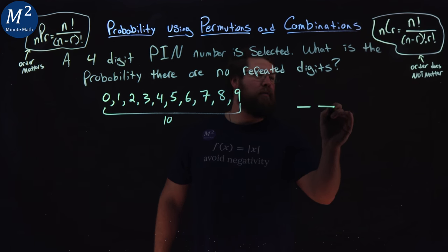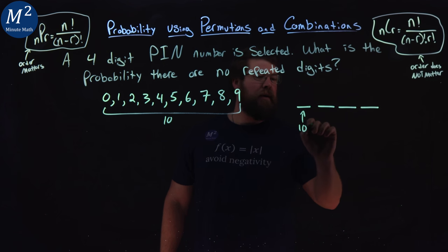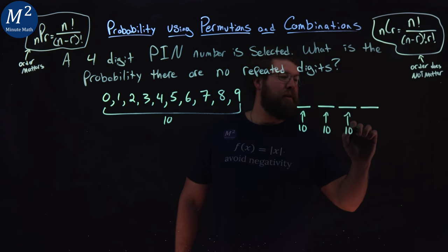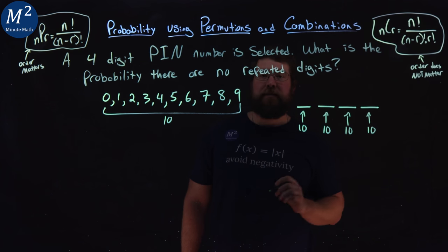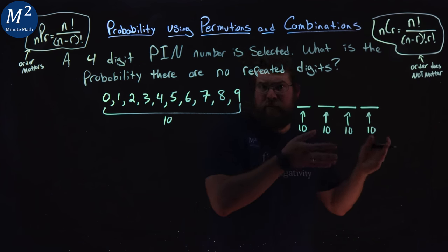Remember, a PIN number has positions 1, 2, 3, 4. So there's 10 options here, 10 options here, 10 options here, and 10 options there. For example, you can have 0, 0, 0, 0.